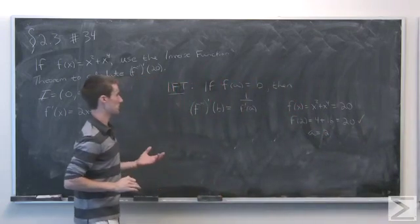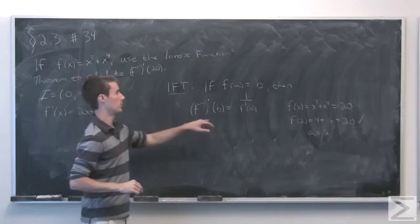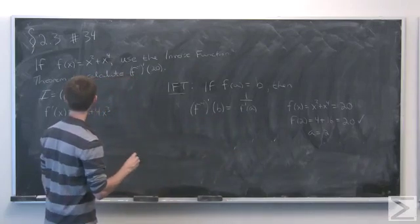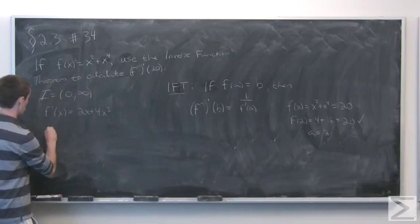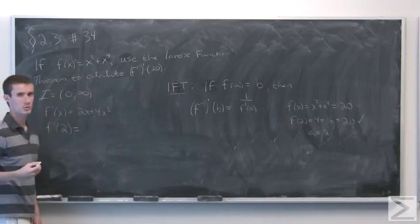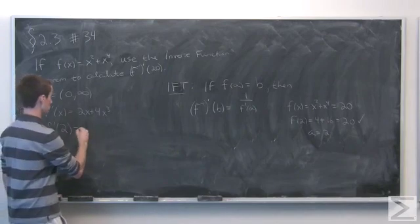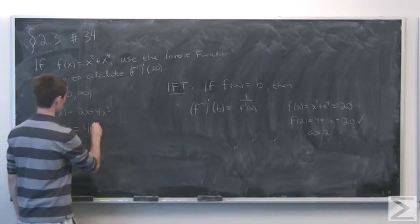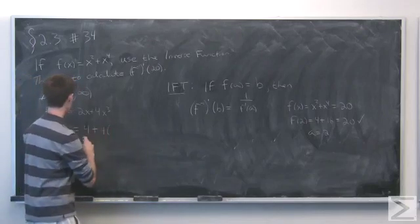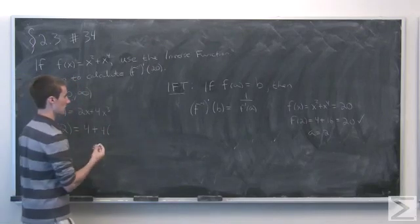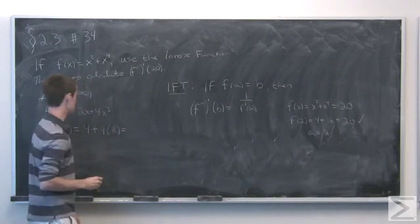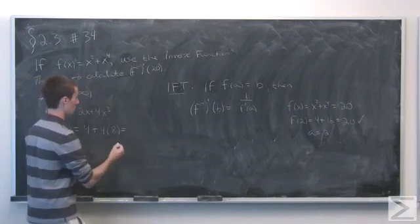So now our next step is to calculate f'(a), or f'(2). So we have f'(2) will be equal to 2 times 2, or 4, plus 4 times 2 cubed, which is 8. And this will be 4 plus 32, or 36.